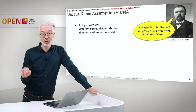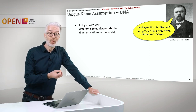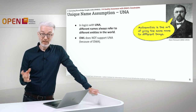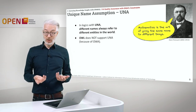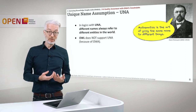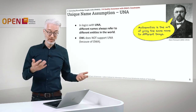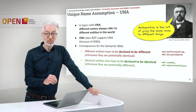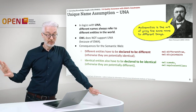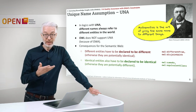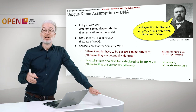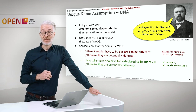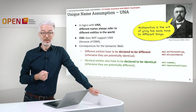In logics, usually, with a unique name assumption, different names always refer to different entities in the world, because the name is given in a unique way. OWL, as the main knowledge representation construction language in the Semantic Web technology, does not support the unique name assumption. This is not possible simply because of the open world assumption, so there is a dependency between these two concepts. The consequence for the Semantic Web is that different entities have to be declared to be different using specific OWL constructs. Otherwise they are potentially identical. On the other hand, identical entities also have to be declared to be identical, because otherwise they are potentially different.